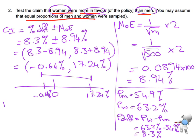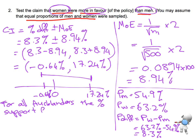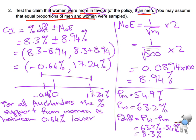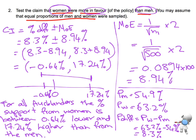So I'm going to interpret the confidence interval: for all Aucklanders, the percentage support from women is between 0.64% lower — notice I haven't written negative 0.64%, I've said 0.64% lower, because that lower conveys the negative — and 17.24% higher than from the men. So there is my interpretation. Now I need to compare it with the claim.